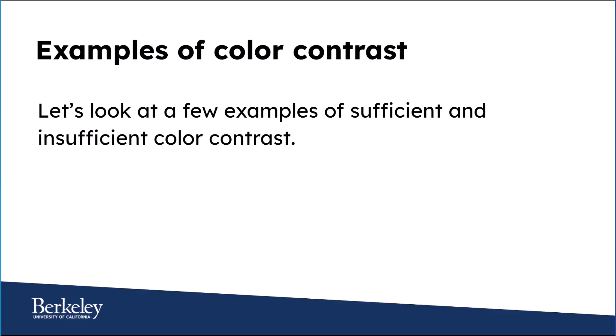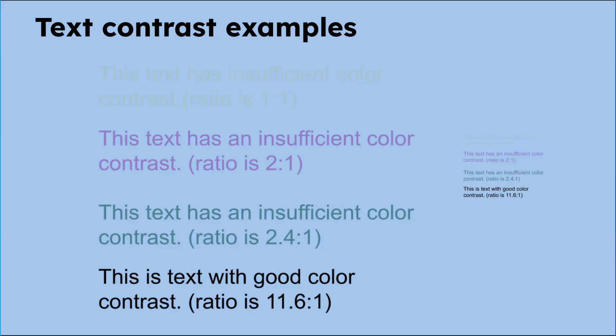Let's look at a few examples of sufficient and insufficient color contrast. This slide shows four examples of text in different colors on a medium blue background, shown as both large text and small text. The black text has an excellent color contrast ratio of 11.6 to 1. The examples in turquoise, lavender, and yellow all fail to meet the required color contrast ratio, both for large and small text. So many of you may be able to see the low contrast large text, but I think we can agree the small low contrast text is difficult to see for most people.